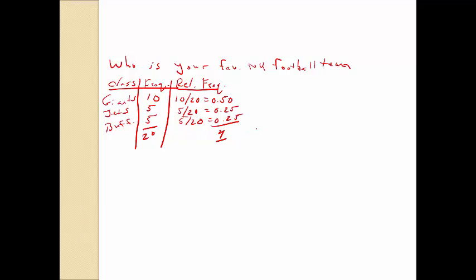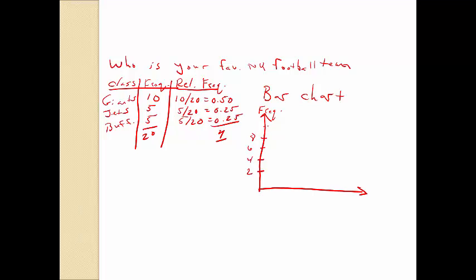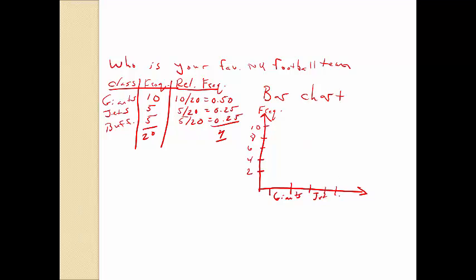This is just a frequency distribution with discrete data — we have counts. The visual representation of this is a bar chart. When you construct a bar chart by hand, you start by drawing the first quadrant of the Cartesian plane. We'll do a frequency bar chart, putting counts along the vertical axis going by twos, and the classes — Giants, Jets, Buffalo — along the horizontal axis.